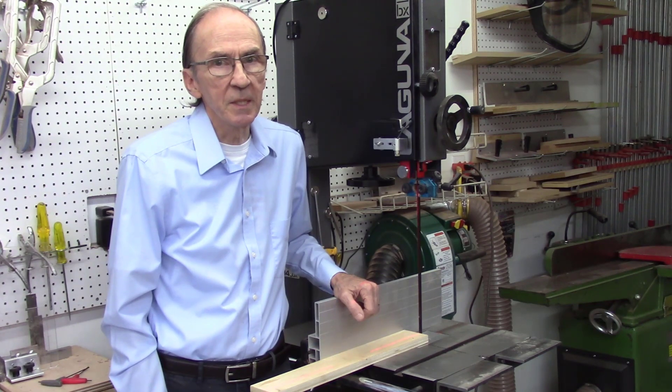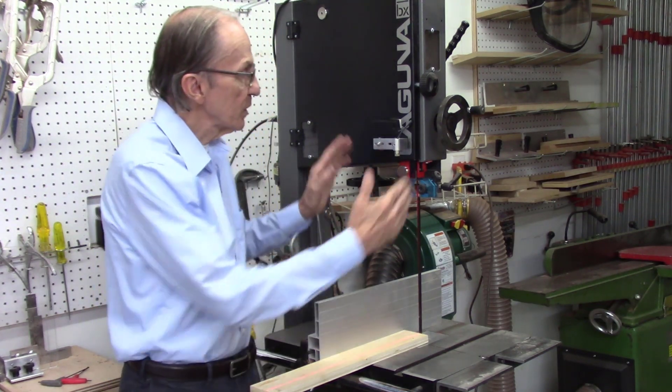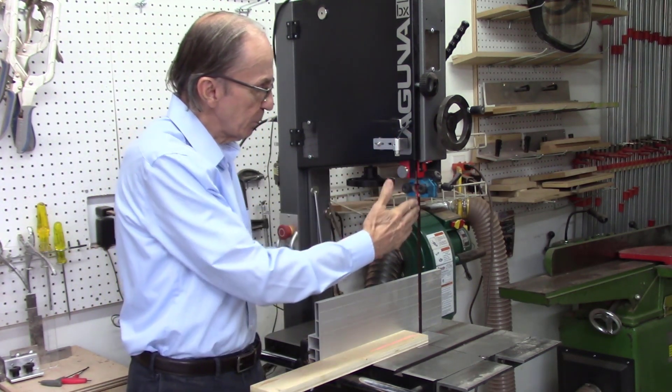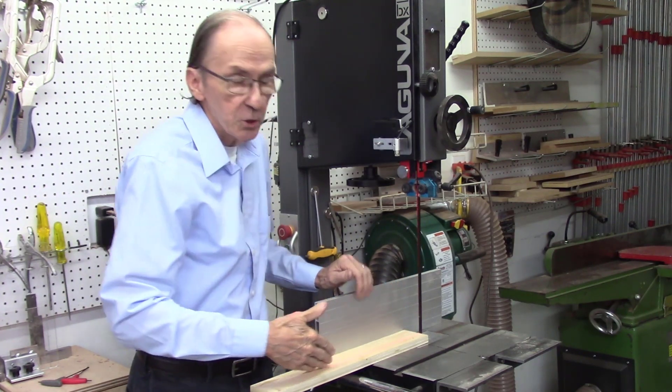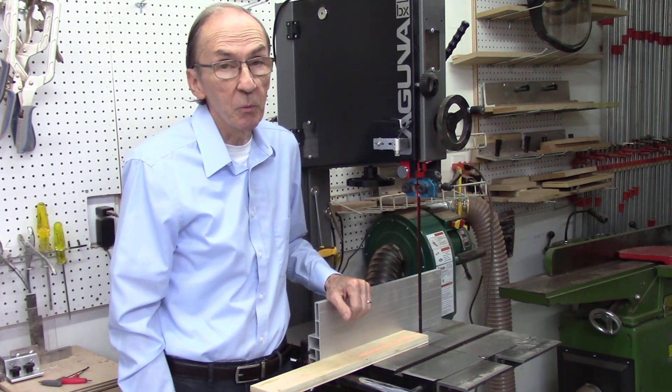The AcuPath laser beam system is a laser beam system that mounts on the side of your bandsaw housing and projects a red laser beam line to show the path of the bandsaw blade to the board you're going to be cutting.